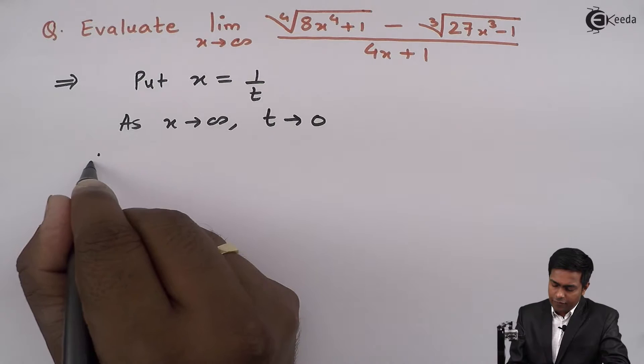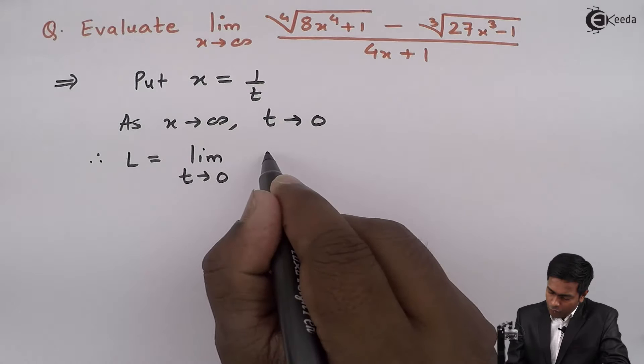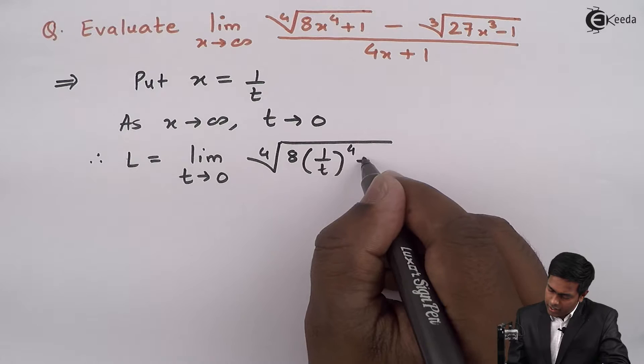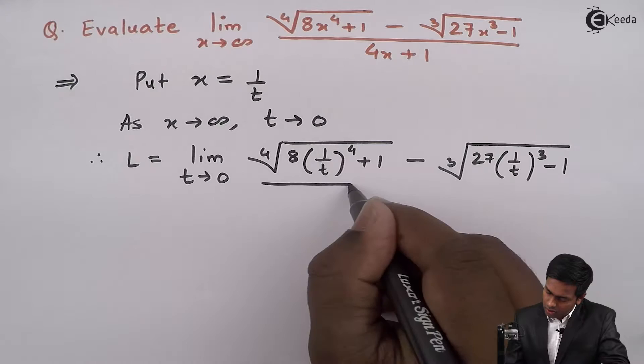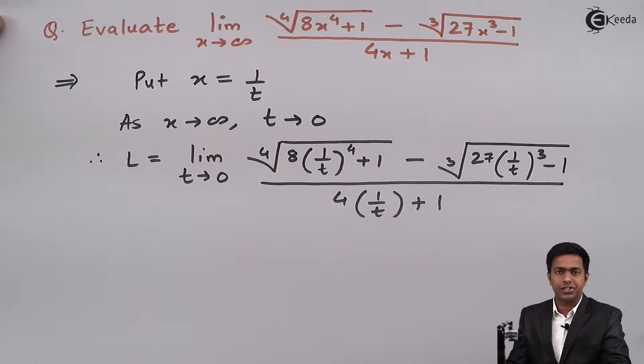So this limit L becomes limit t tends to 0 of 4th root of (8 · (1/t)⁴ + 1) minus cube root of (27 · (1/t)³ - 1), all upon 4 · (1/t) + 1. I have substituted x as 1/t everywhere in the given function.